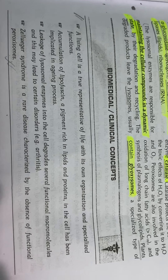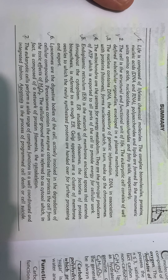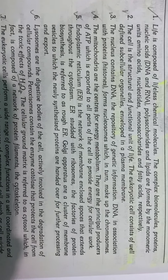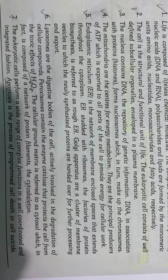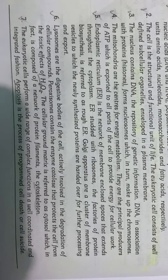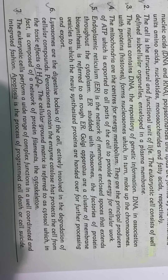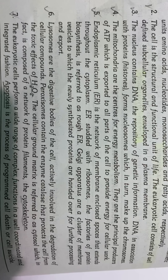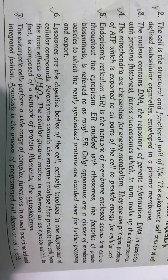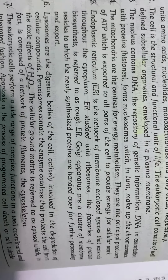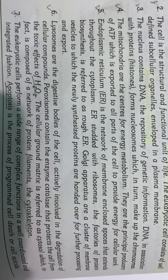Summary: Life is composed of lifeless chemical molecules. The complex biomolecules — proteins, nucleic acids (DNA, RNA), polysaccharides, and lipids — are formed by monomeric units: amino acids, nucleotides, monosaccharides, and fatty acids, respectively. The cell is the structural and functional unit of life. Eukaryotic cells consist of well-defined subcellular organelles enveloped in a plasma membrane. The nucleus contains DNA, the repository of genetic information; DNA is associated with proteins called histones, forming nucleosomes, which make up chromosomes. The mitochondria are the centers for energy metabolism and the principal producers of ATP.